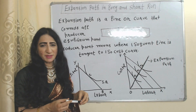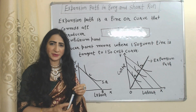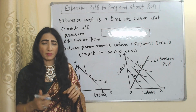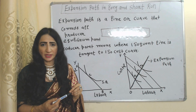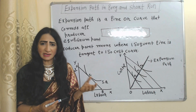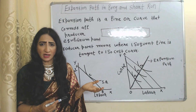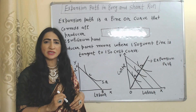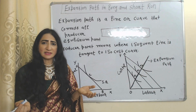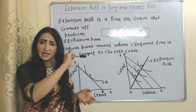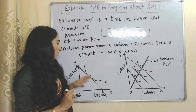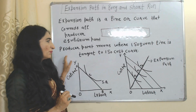Hello everyone, my name is Mini Sethi. I hope you all are staying healthy. Today we are going to talk about expansion path in the long run and short run. Expansion path is a line or curve that connects all producer equilibrium points.